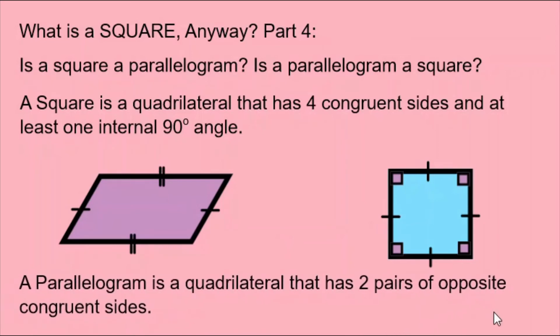Here's the definition of a parallelogram: a quadrilateral that has two pairs of opposite congruent sides. A square, although it has four congruent sides, can be said to have two pairs of opposite congruent sides. Therefore, a square is a parallelogram.